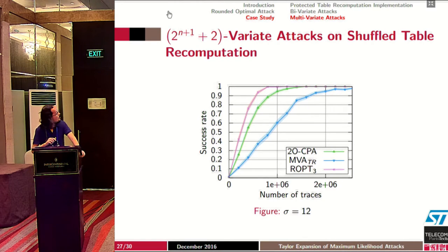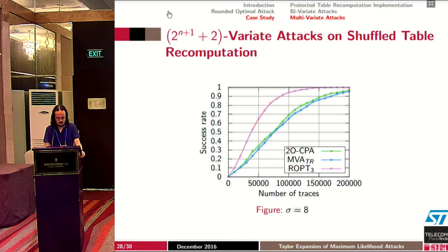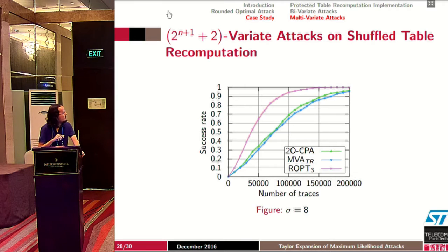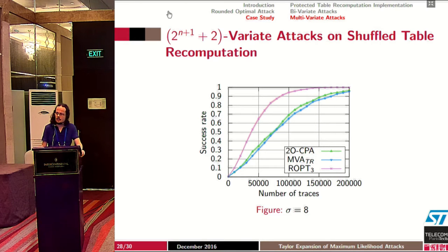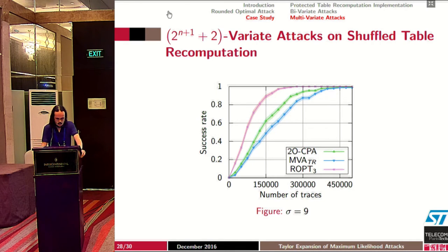For intermediate noise σ=8, our new attack is much better than the state-of-the-art, requiring two times fewer traces to reach the same success rate. For 80% success, the new attack needs around 60,000 traces while the other attack needs around 120,000 traces. For other noise values, the gain is smaller but our new attack is still better than state-of-the-art.